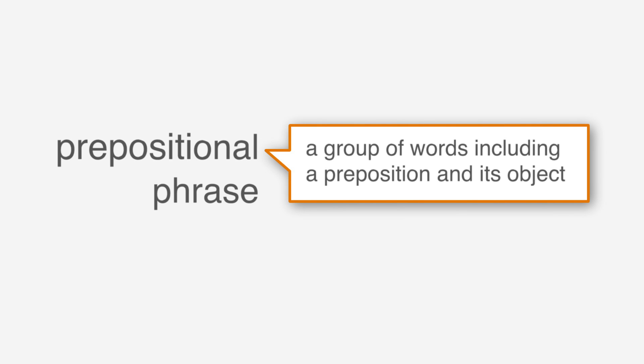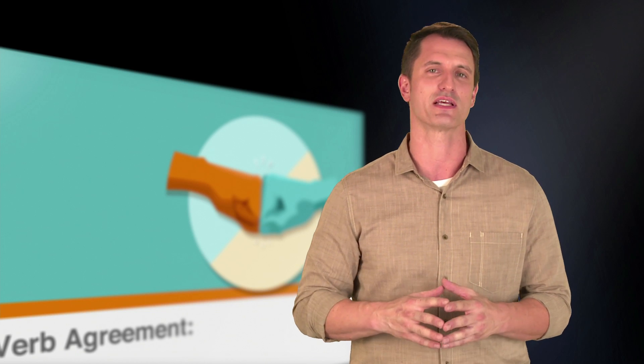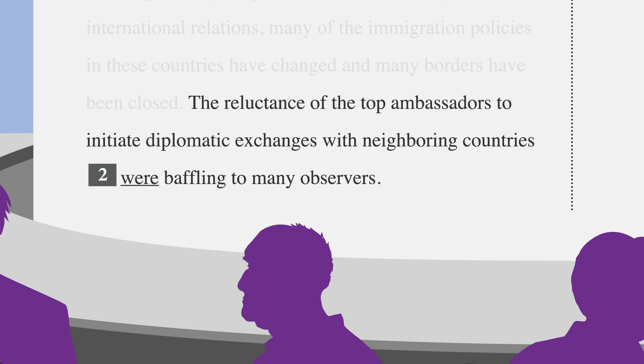A prepositional phrase is a group of words including a preposition and its object. Just like with modifiers, we can ignore prepositional phrases when we're checking subject-verb agreement. You can bracket out the prepositional phrase to find the correct verb that goes with it. Let's take a look at another sentence. The reluctance of the top ambassadors to initiate diplomatic exchanges with neighboring countries were baffling to many observers. To find the proper subject-verb agreement, we have to separate out the prepositional phrases. There are actually four prepositional phrases in this sentence.